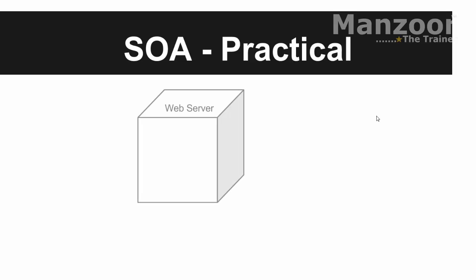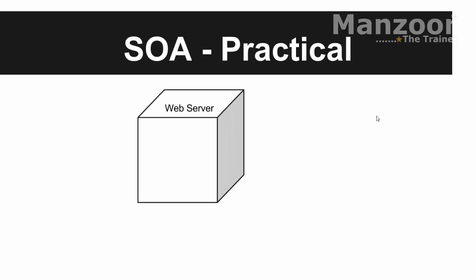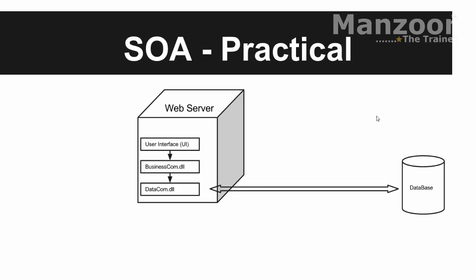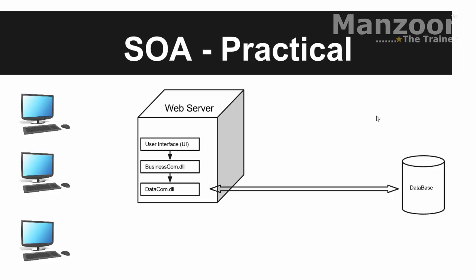Say I have a web server and I have hosted a web application on it. It will have different layers: a user interface, then a business logic layer — that is the business component — then the business component talks to the data component, which is the data access layer. The data component talks to the database. All clients interact with the UI. This is a three-layered architecture: presentation layer, business logic layer, and data access layer.